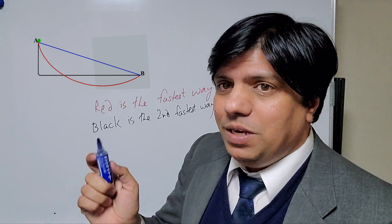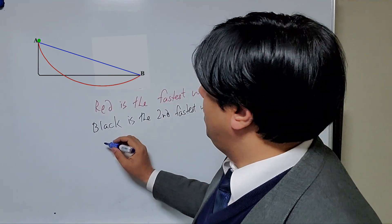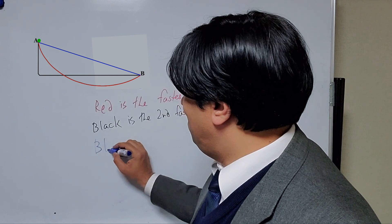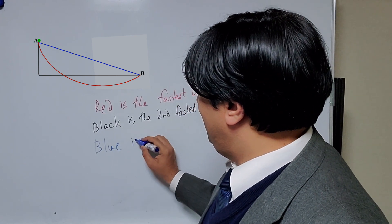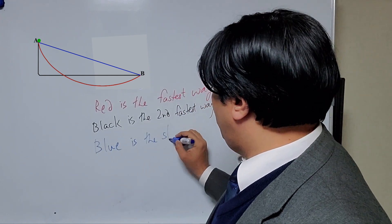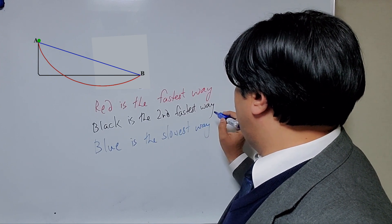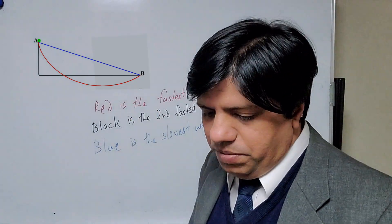And, believe it or not, blue is actually the least fastest way. So, blue is the slowest way to point B.